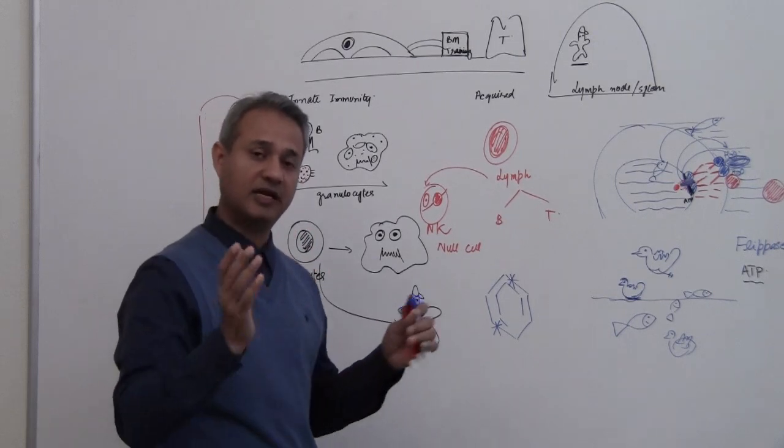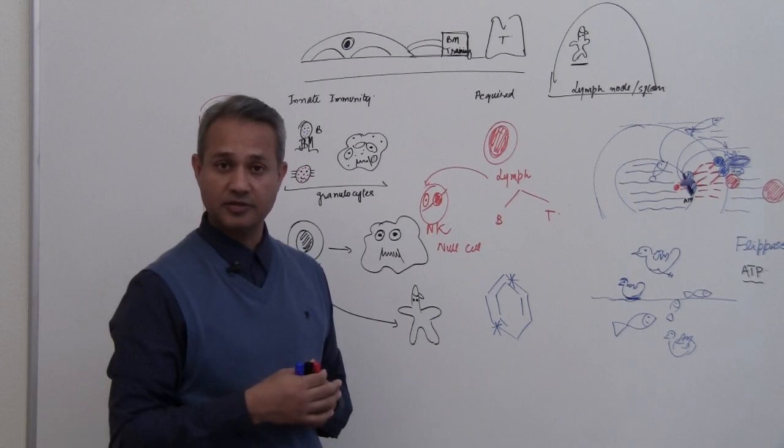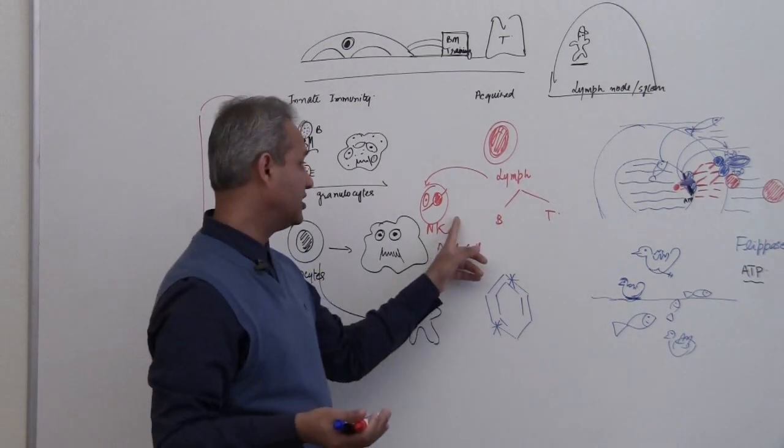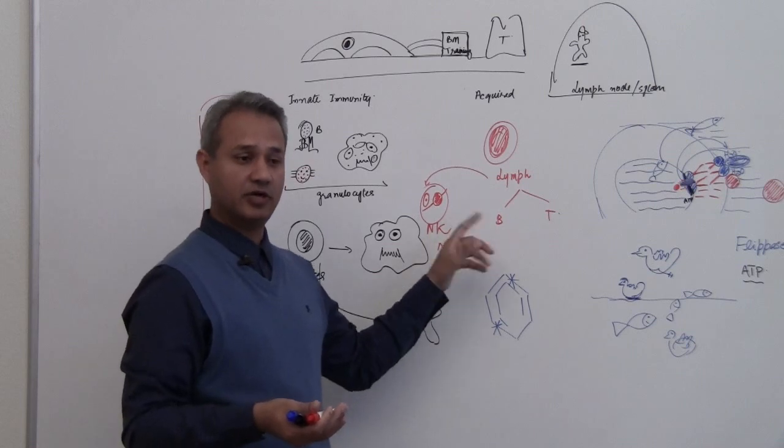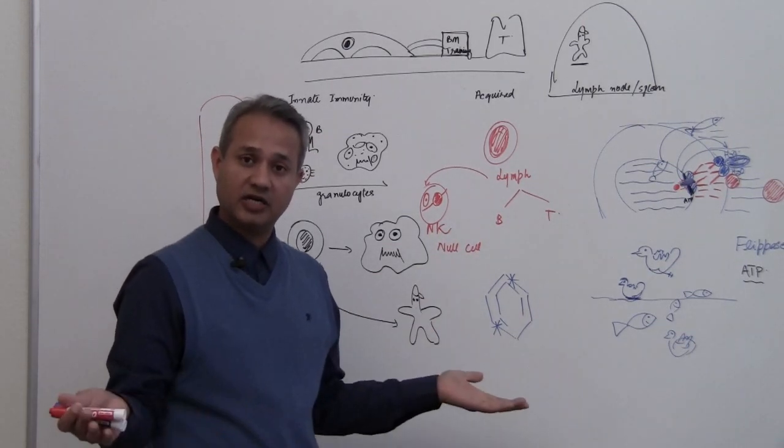For example, remember we talked about in our last lectures, MICA appears on the tumor cells, right? So that is also a sign, and natural killer cell is very good at feeling those MICAs and it can kill the tumor cells. It is doing that right now.